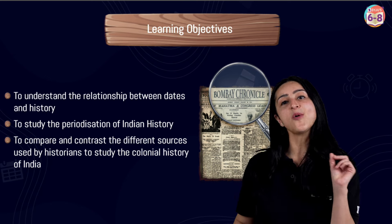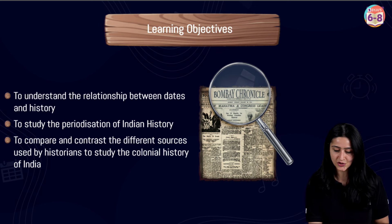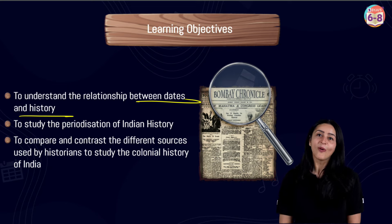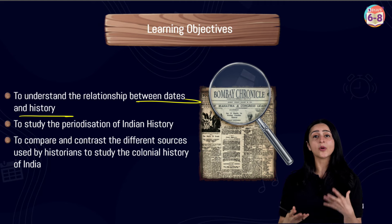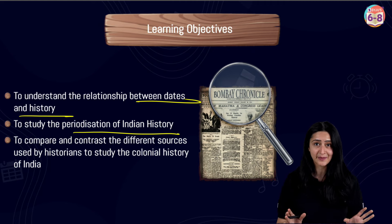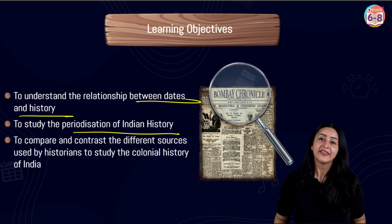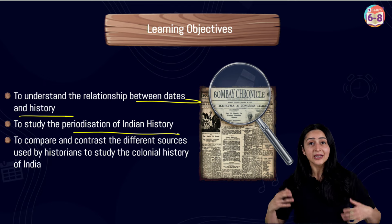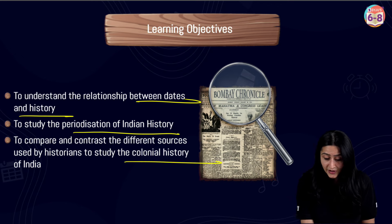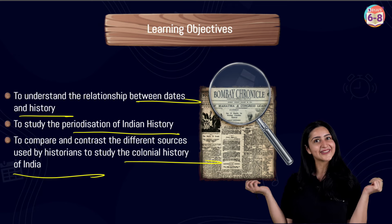The chapter 'How, When and Where' will first help us understand the relationship between dates and history — and we know that dates are very important for history. This chapter will also help us understand the periodization of Indian history. Not just that, this chapter will also help us compare and contrast different sources used by historians to study the colonial history of India. We are going to learn how to study history better.